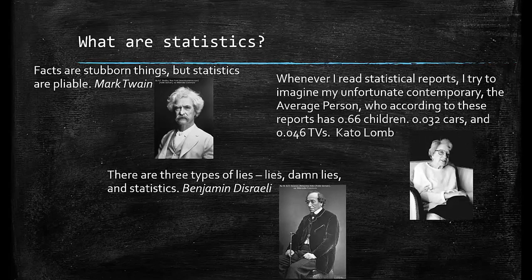Finally, from Cato Loom: "Whenever I read statistical reports, I try to imagine my unfortunate contemporary, the average person who, according to these reports, has 0.66 children, 0.032 cars, and 0.046 TVs." As you can see from the quotes, there is a little more disdain for statistics. However, they can be strong evidence for an argument when obtained from the proper source.